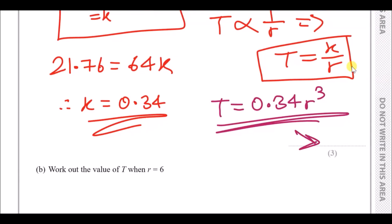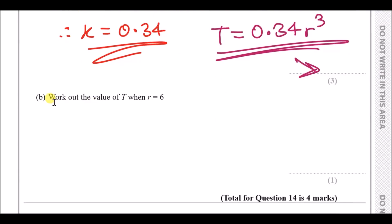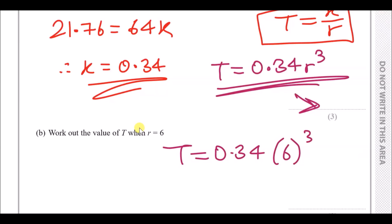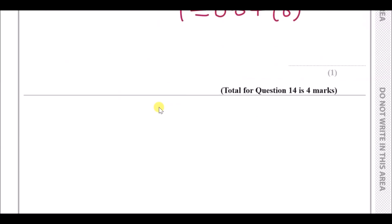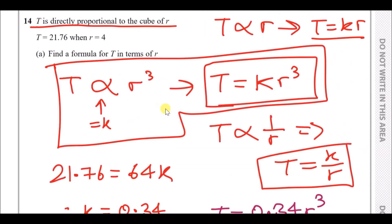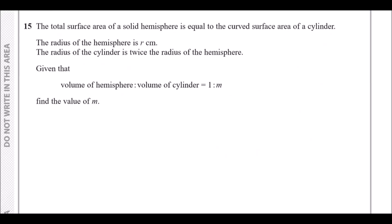Part b: find the value of T when r = 6. Simply substitute r = 6 into the formula: T = 0.34 times 6 cubed. Calculating that gives T = 73.44. Once you've done this once or twice you'll master it.